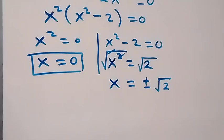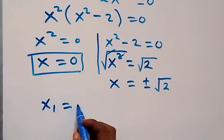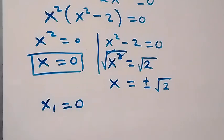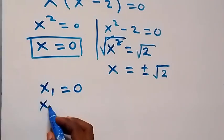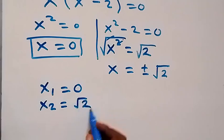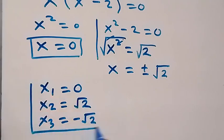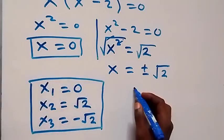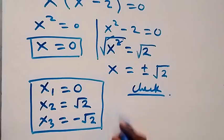So we have three solutions: x₁ equals 0, x₂ equals positive root 2, and x₃ equals negative root 2. These are the three solutions to this given problem.